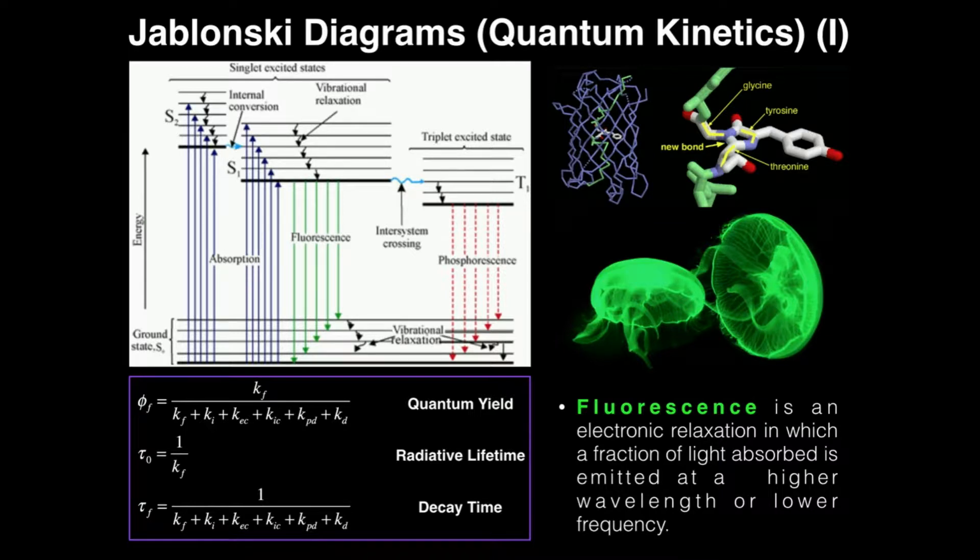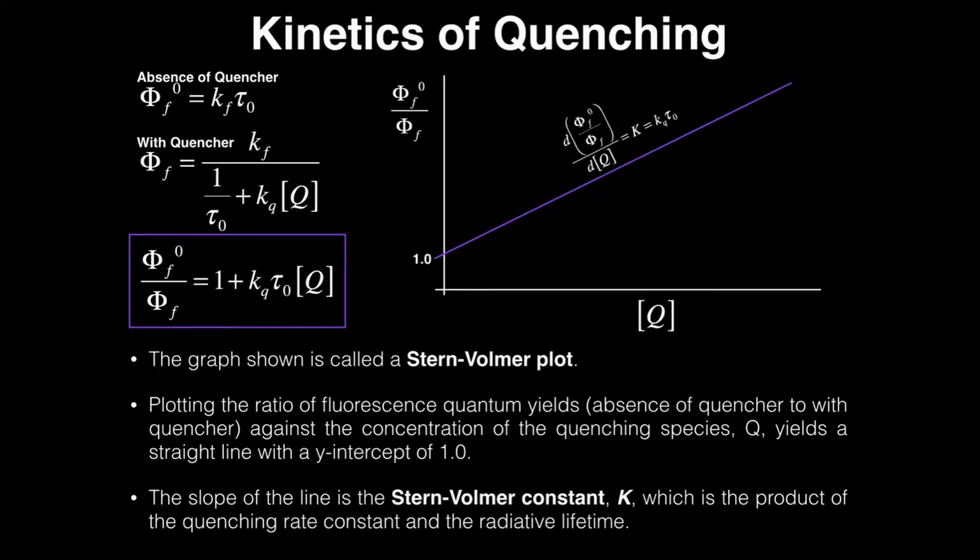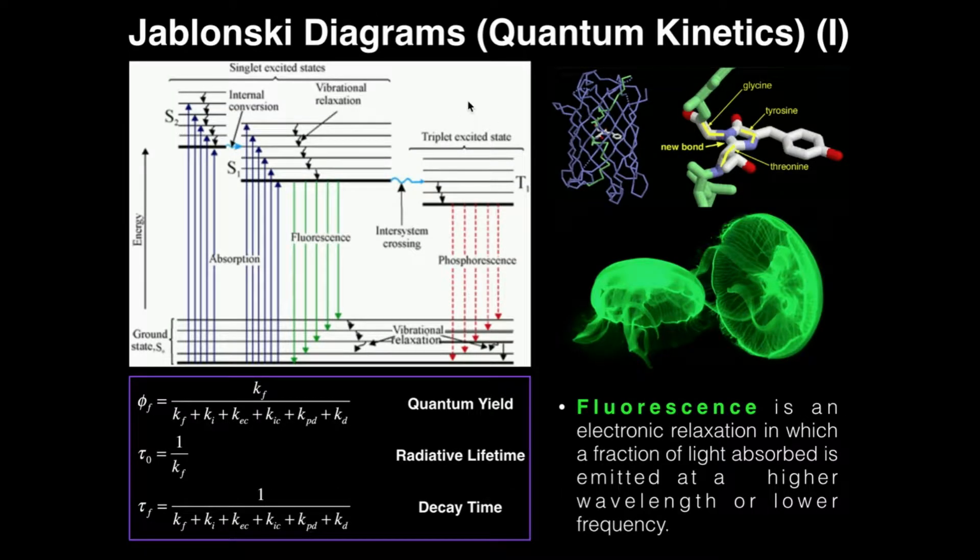In this video, we're going to go over something called a Jablonski diagram, and this is really about quantum kinetics. While we're not actually looking at quantum mechanics yet in a lot of detail, there are some quantum events that you've probably seen in courses such as analytical chemistry, maybe instrumental chemistry. We're going to look at the kinetics of those and how we deal with them, and that's ultimately going to lead to the Stern-Volmer plot, which we'll do in a separate video. So I don't want to go into a whole lot of detail about these specific events, but I'll at least do a little bit.